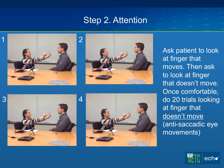Next we're going to do the antisaccade eye movements, specifically to measure attention. This is the most difficult part — this is where we all have to be trained. You raise your fingers to the level of the patient's shoulders, about that width as well. I'm going to instruct you, Brian, to look at the finger that moves, and then look back at my nose afterwards. Let's practice: look at the finger that moves — okay, and back to my nose. Look at the finger. My nose.